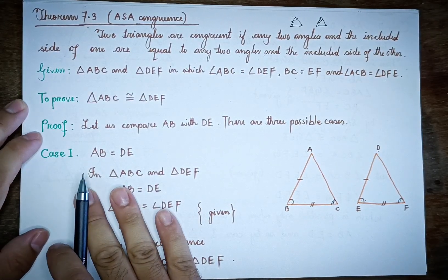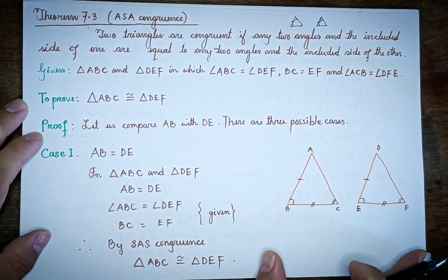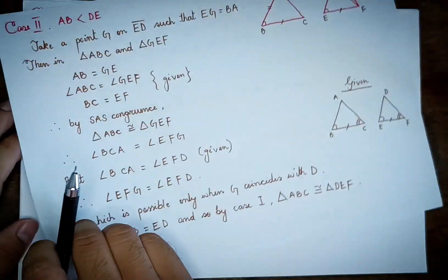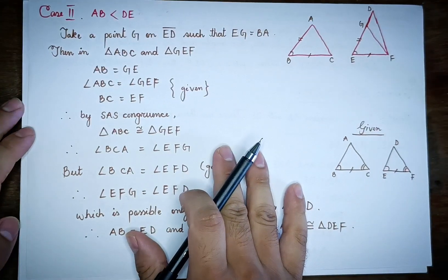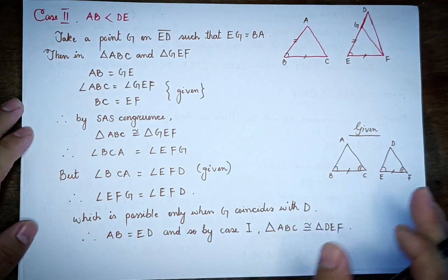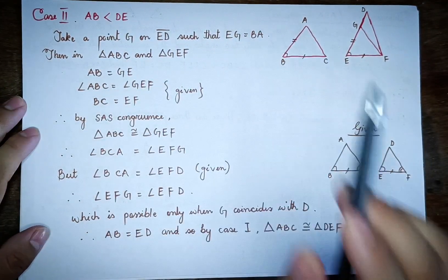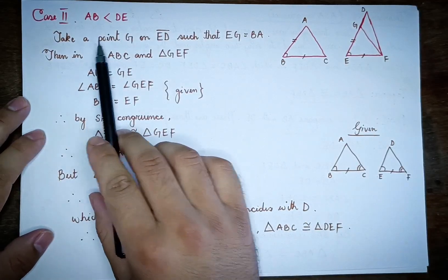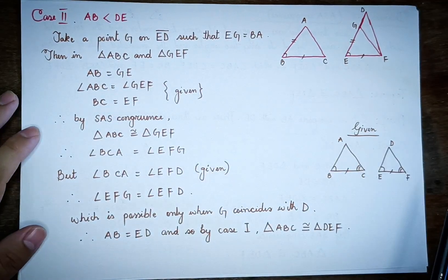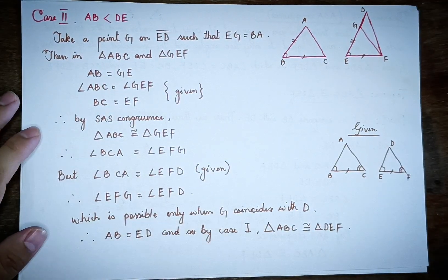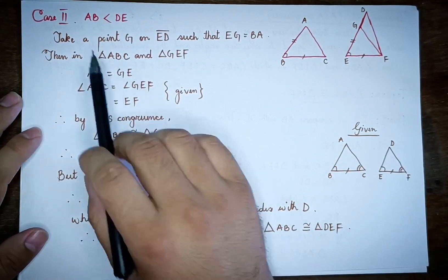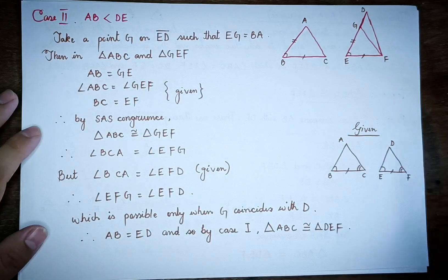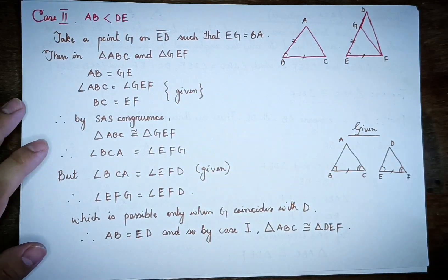Case 2: AB and DE are not equal. In this case, AB is not equal to DE. We need a different approach to prove congruence.